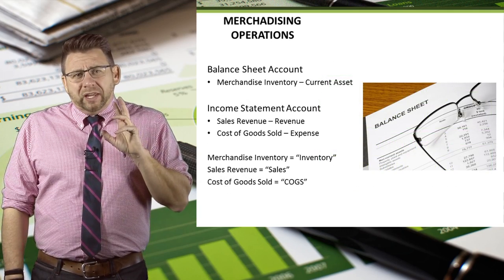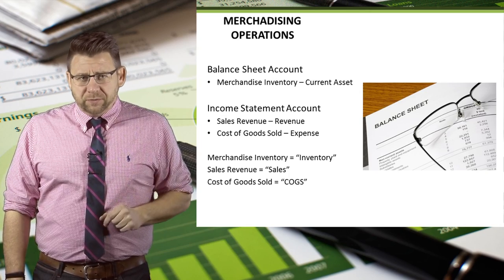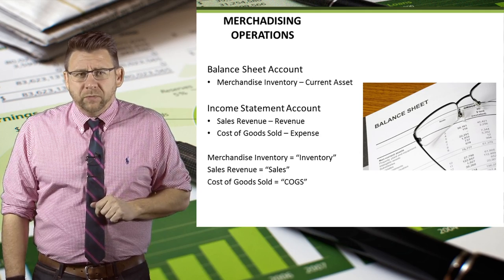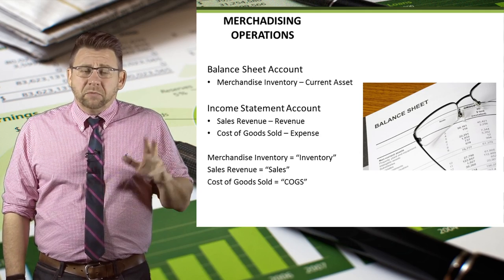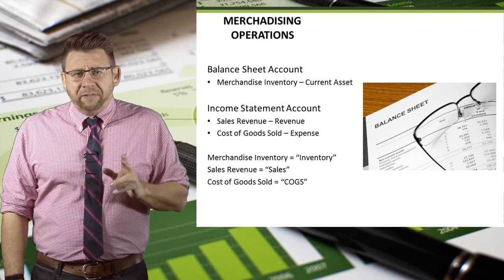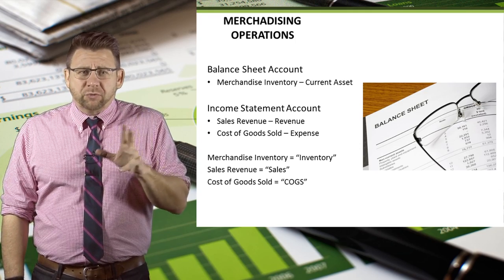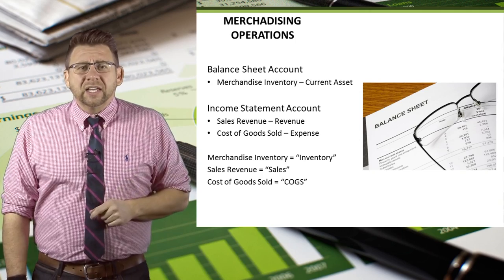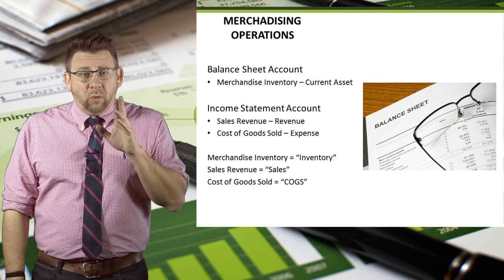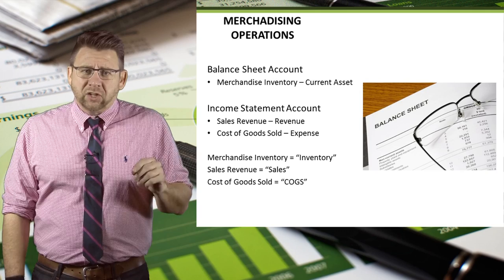As we begin to learn about accounting for merchandisers, it's important to understand a few new account names. Merchandise inventory, commonly known as inventory, is a current asset found on the balance sheet. Sales revenue, sometimes just referred to as sales, is a revenue account found on the income statement. And while service firms earn service revenue, merchandisers earn sales revenue.